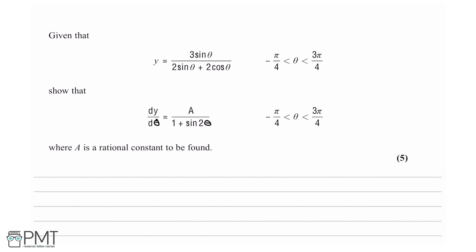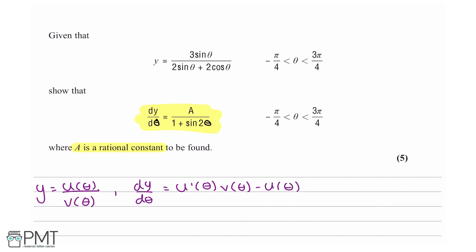The first thing we're going to do is highlight the final form the examiner wants us to give our answer in, as well as where a is a rational constant, because those are both key in how we direct our answer. This is called a rational function, and the way you differentiate functions like this — given y equals u(θ) over v(θ) — is: dy/dθ equals the derivative of u(θ) times v(θ) minus u(θ) times the derivative of v(θ), all over v(θ) squared.